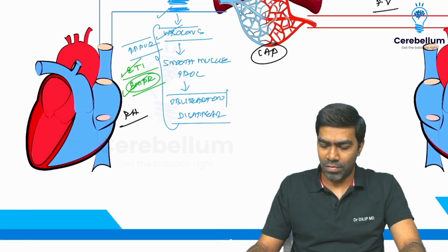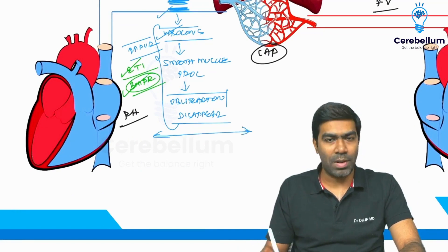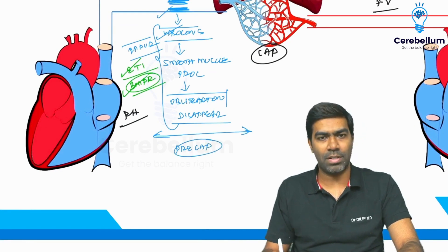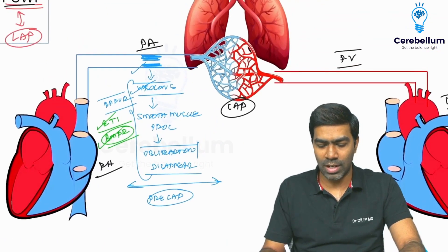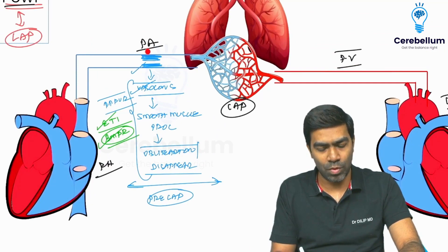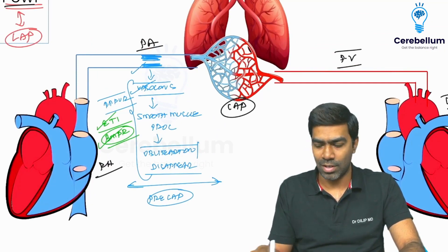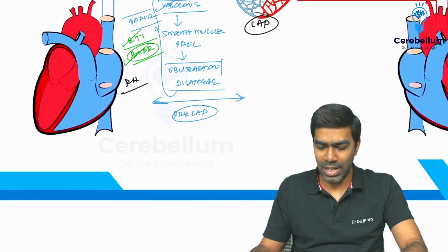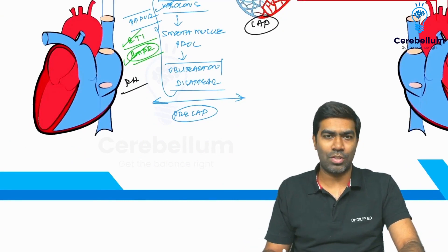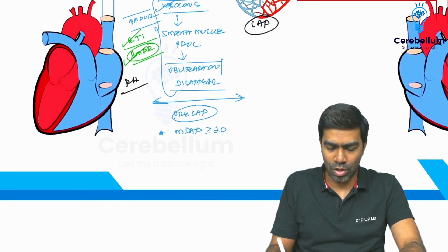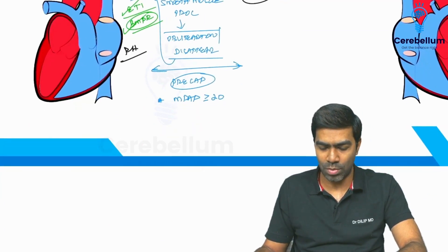Type 1 pulmonary artery hypertension is also called precapillary pulmonary hypertension, because the problem is before the capillaries — in the pulmonary arterioles. In terms of findings, MPAP will be more than or equal to 20 mmHg. It will be elevated; without this you cannot make a diagnosis of pulmonary hypertension.